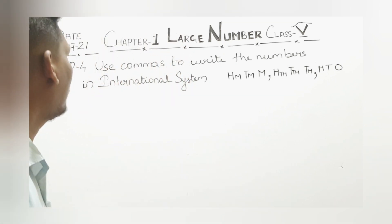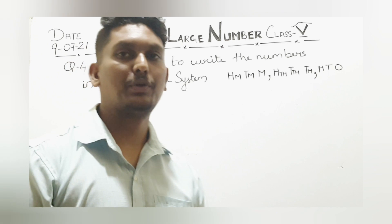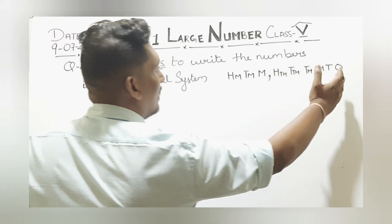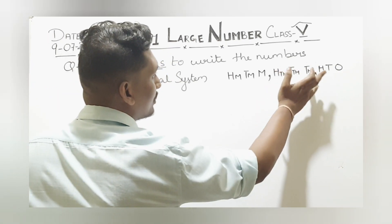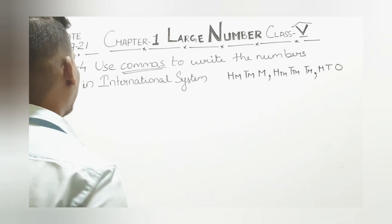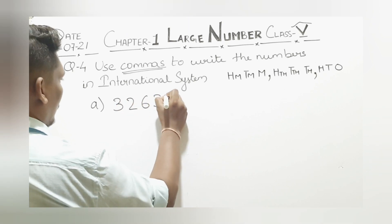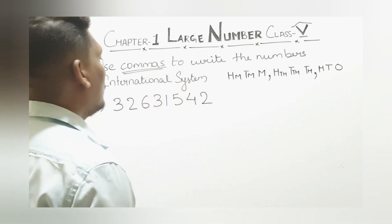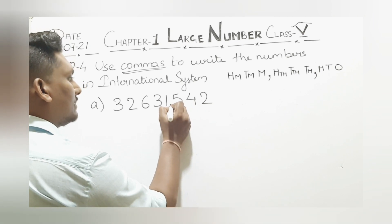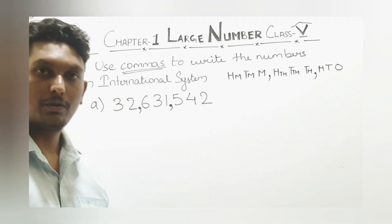Now come to question number 4. In question number 4, we have to use commas to write the numbers in the international system. As discussed in the previous video, in the international system, after every 3 places we put a comma — ones, tens, hundreds, comma, thousands up to hundred thousands, comma, then millions. Always put the comma from the back side: count 3 places, put a comma, then again 3 places, put a comma. The first number is 3,263,1542 — placing commas from the back gives 32,631,542. Now come to the next one.